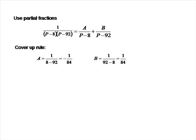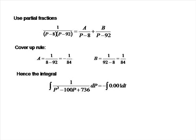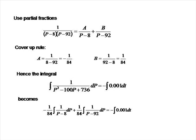So the integrals we've been trying to work out can be written as minus 1 over 84 times the integral of 1 over (p minus 8) plus 1 over 84 times the integral of 1 over (p minus 92), and that equals minus the integral of 0.001 with respect to t. Each of these integrals is easy to work out: the two on the left-hand side give natural logarithms of (p minus 8) and (p minus 92) respectively, and the right-hand side integrates to minus 0.001t.